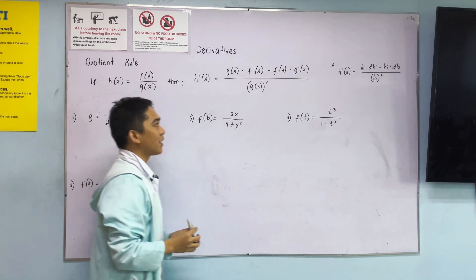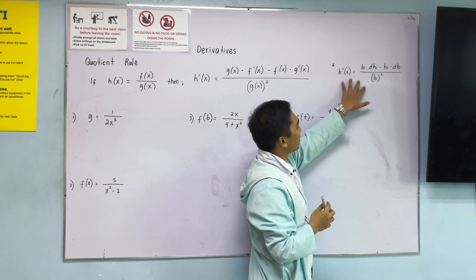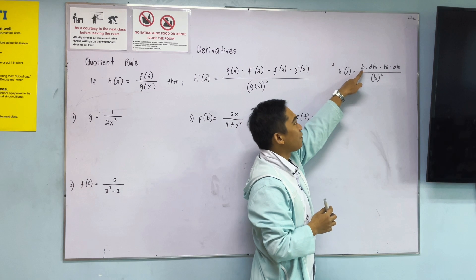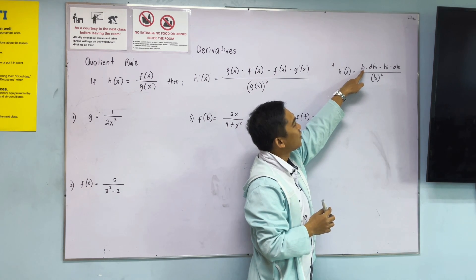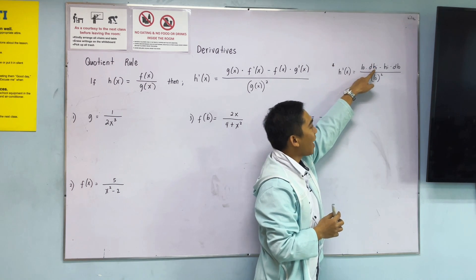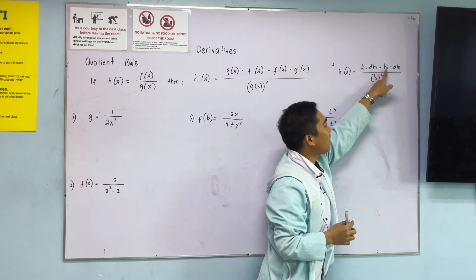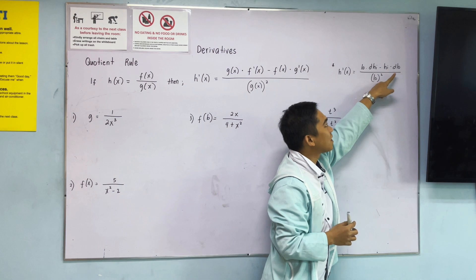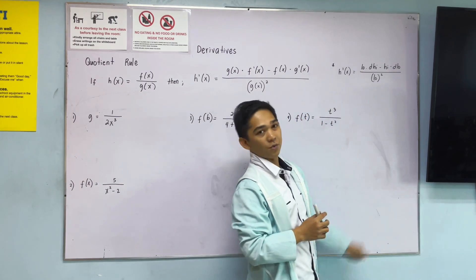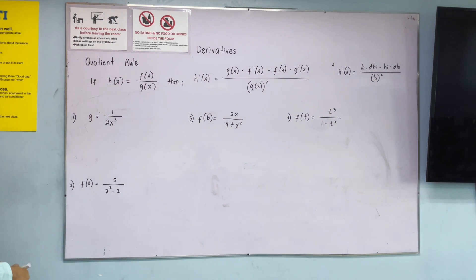Some students use this code. To get the derivative using the quotient rule, we have: low d high — copy the function in the denominator, or low, times derivative of the high — minus high d low — copy the given function in the numerator times derivative of the function in the denominator — all over low-low, or low-squared. Low d high minus high d low over low-low.